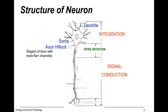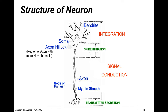From there, signal conduction occurs — the signal is propagated down the axon. Important parts of the morphology here are the myelin sheaths, which increase conduction rate, separated by the nodes of Ranvier. Finally, at the termini, transmitter secretion occurs, where neurons synapse onto other axons.